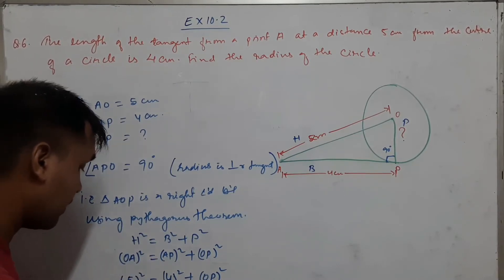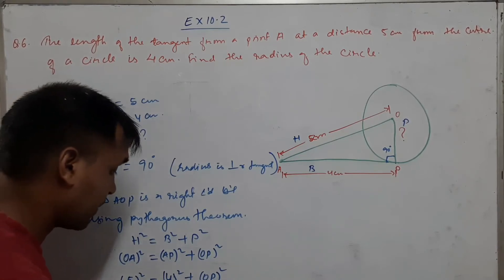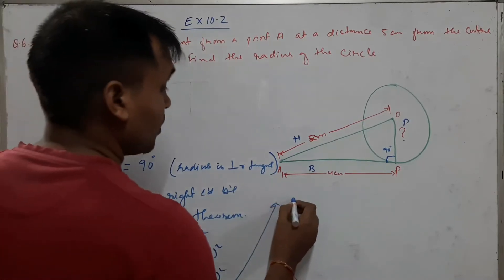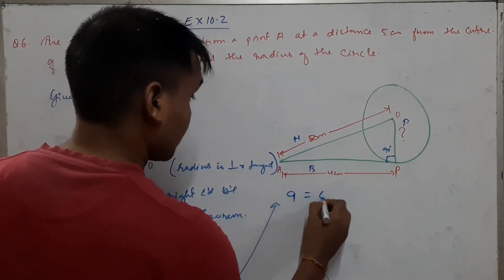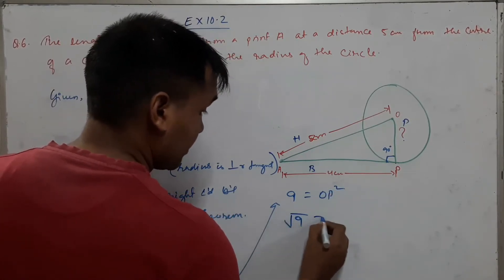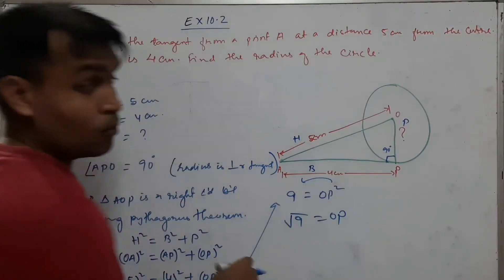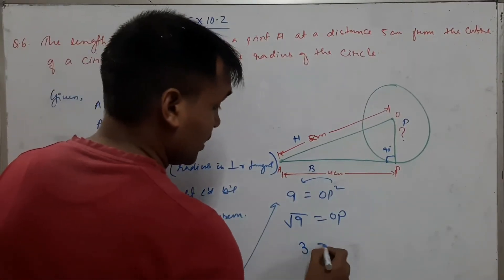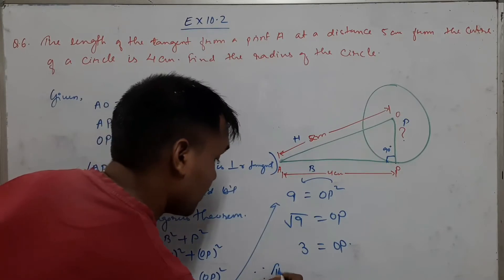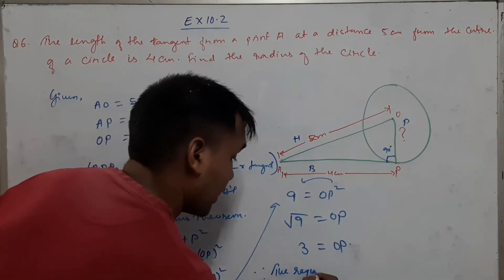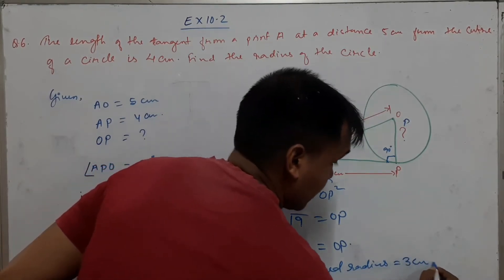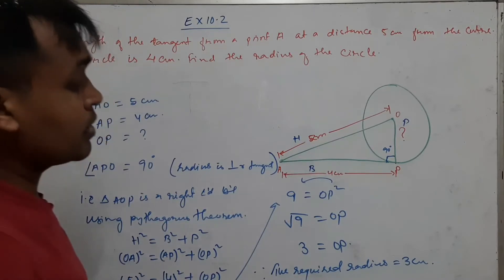So 25 minus 16 equals OP squared. That gives OP squared equals 9. Taking the square root, OP equals 3. Therefore, the required radius equals 3 centimeters.